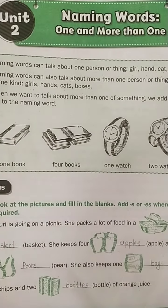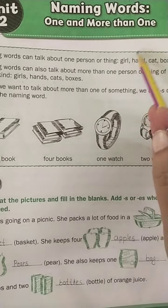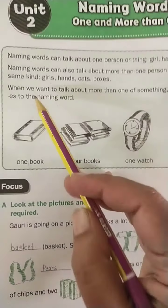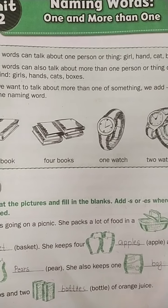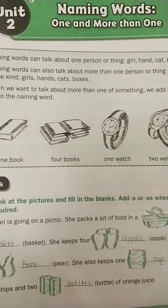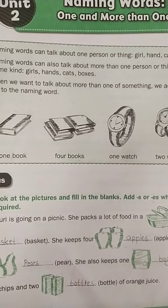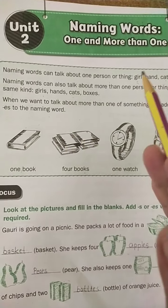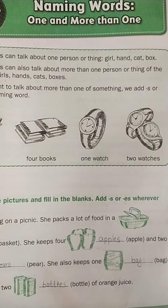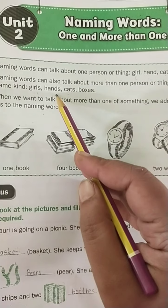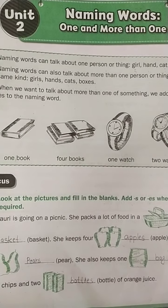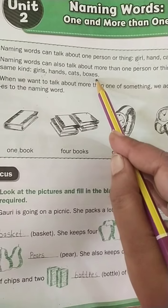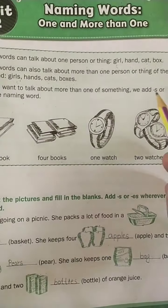Now we are going to learn naming words — one and more than one. One means a single thing, and more than one means more than one person or thing. Naming words can talk about one person or thing — for example: girl, hand, cat, box. To talk about more than one person or thing of the same kind — girls, hands, cats, boxes.